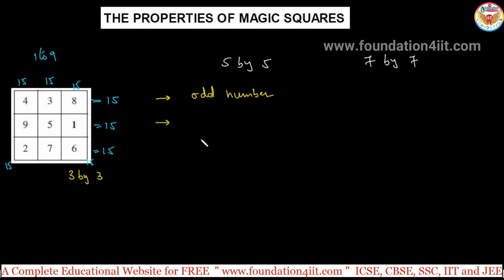Next one, the first and last number always lie on the same row that are exactly opposite to each other. If you see here 1 to 9 numbers we use, 1 is here and the last number also in the same row. First number and last number should be in the same row. This is a rule for the magic square.